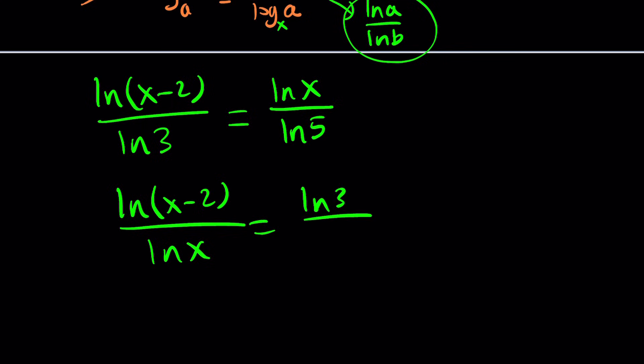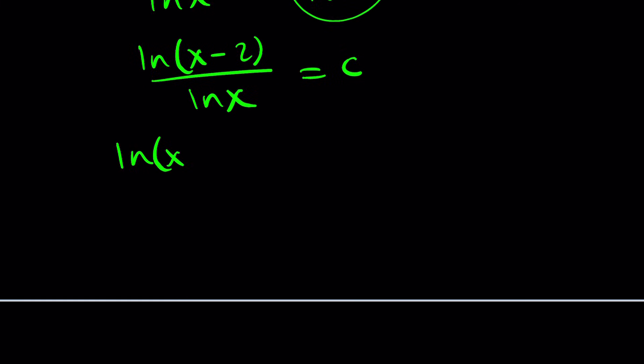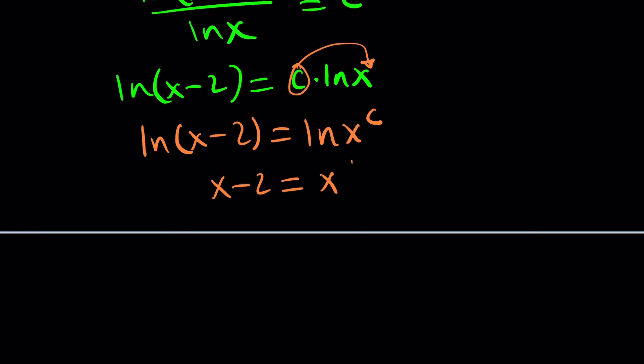Let's divide by ln(x), multiply by ln(3), so that we can put the variables on the same side and constants on the other. This would only be great if you were able to solve an equation like this. Let's call ln(3)/ln(5) a constant c. Whenever you have an equation like ln(x-2) divided by ln(x) equals c, can you solve this equation?